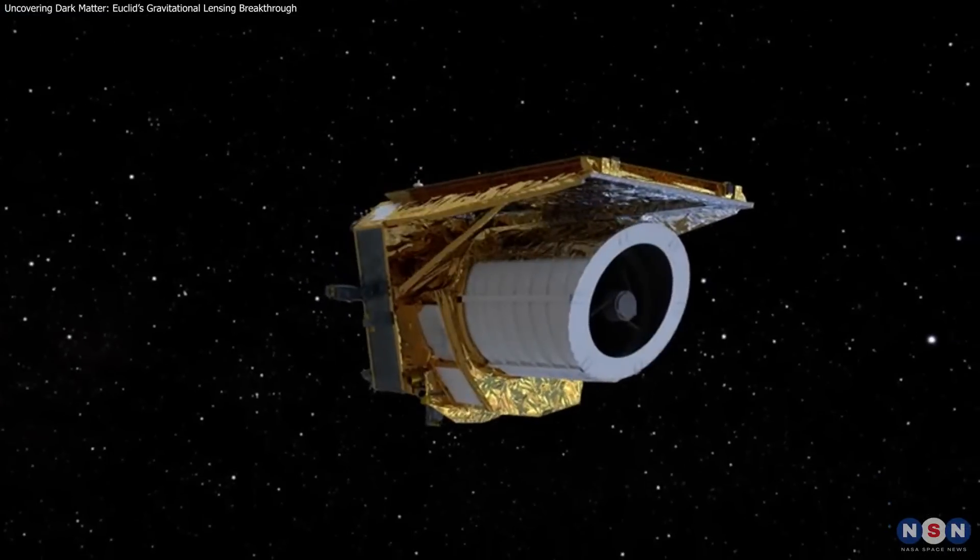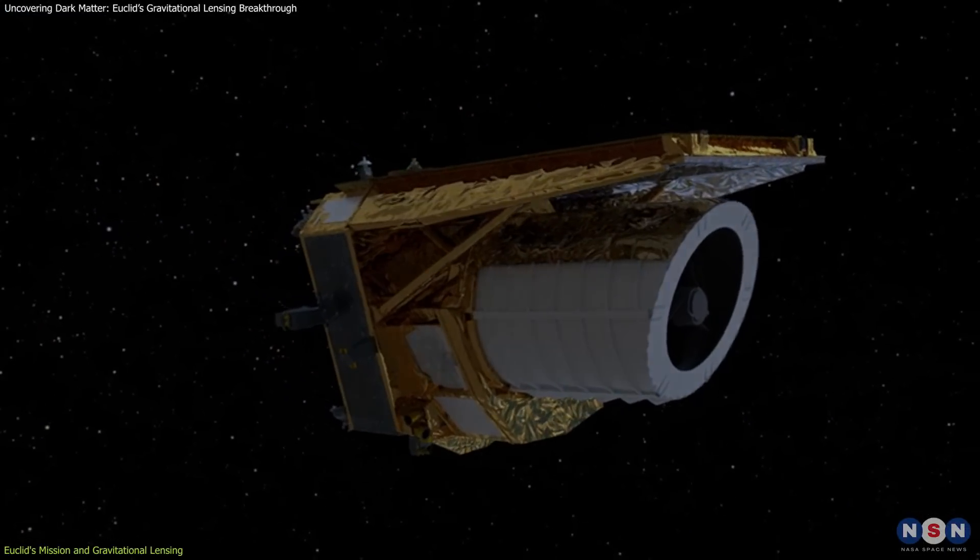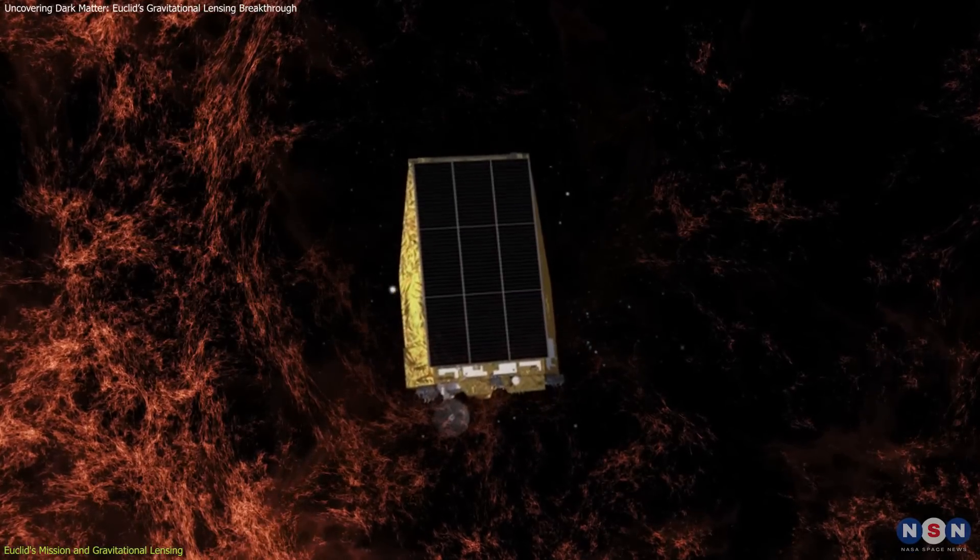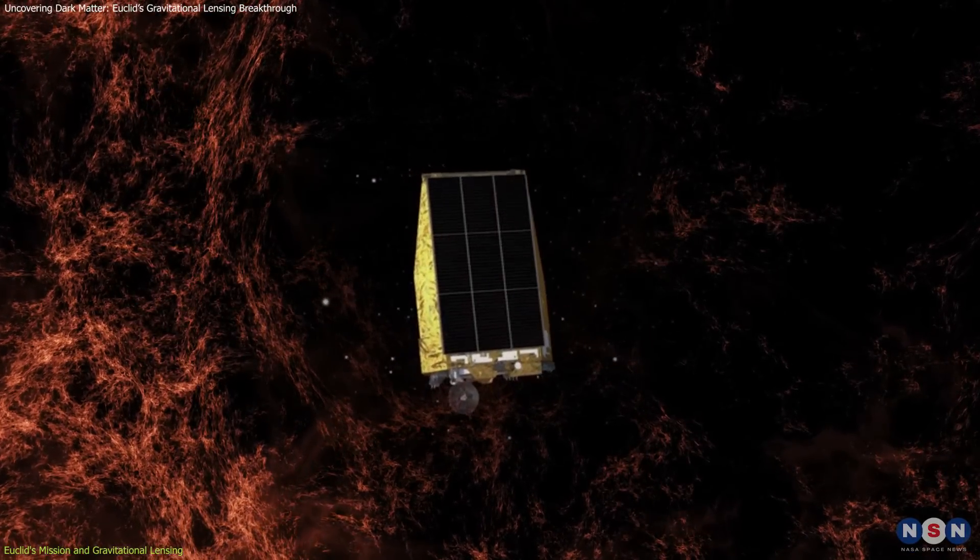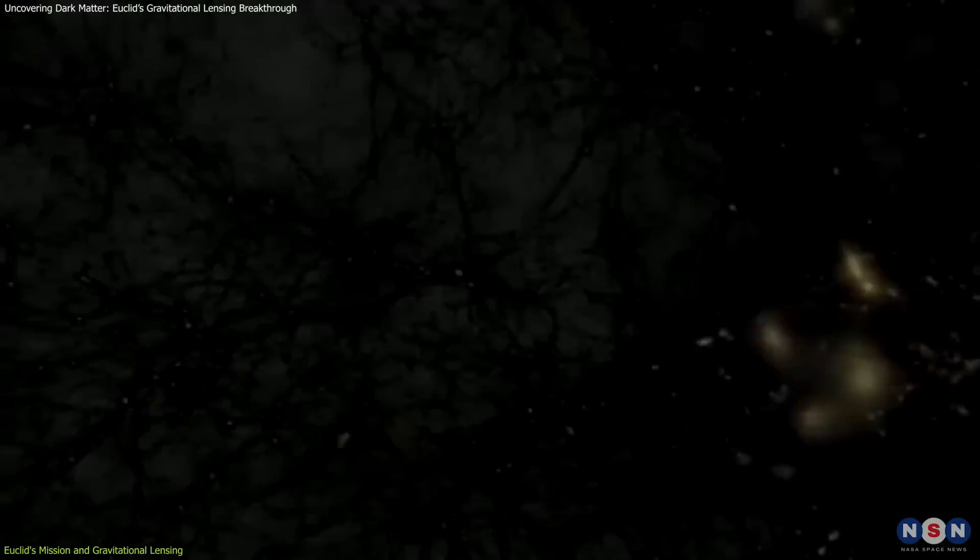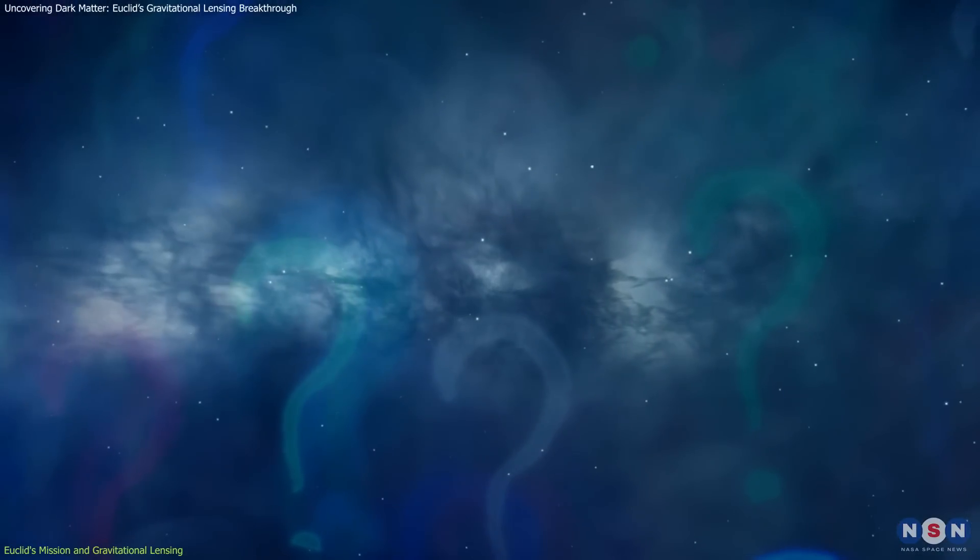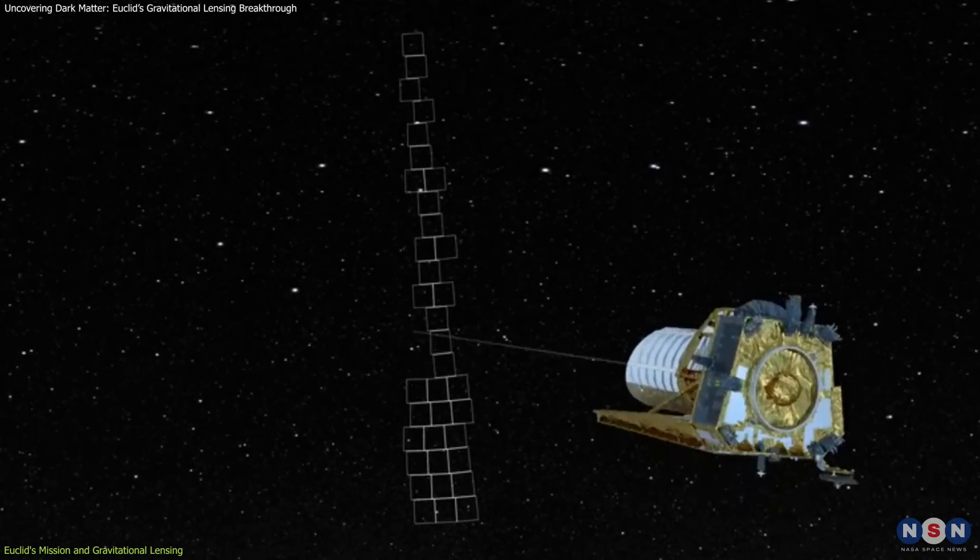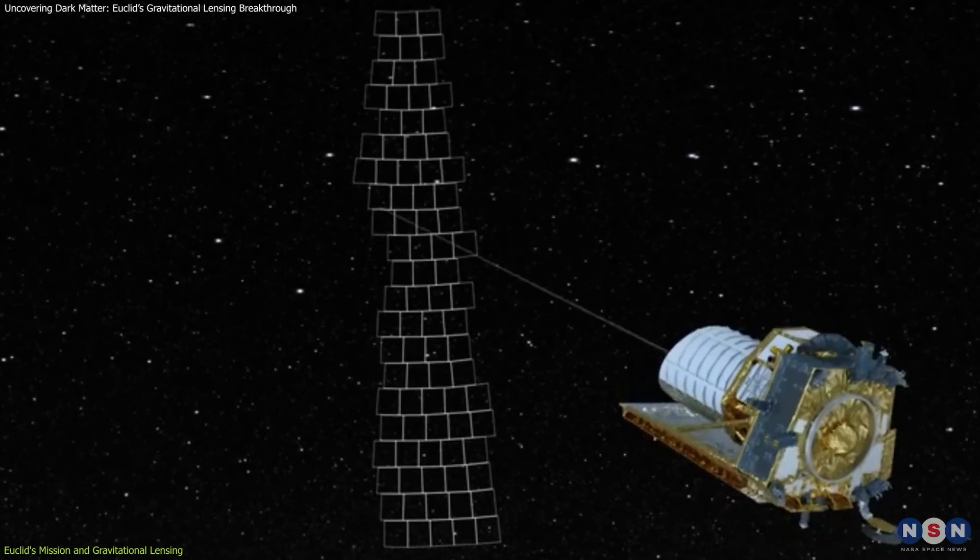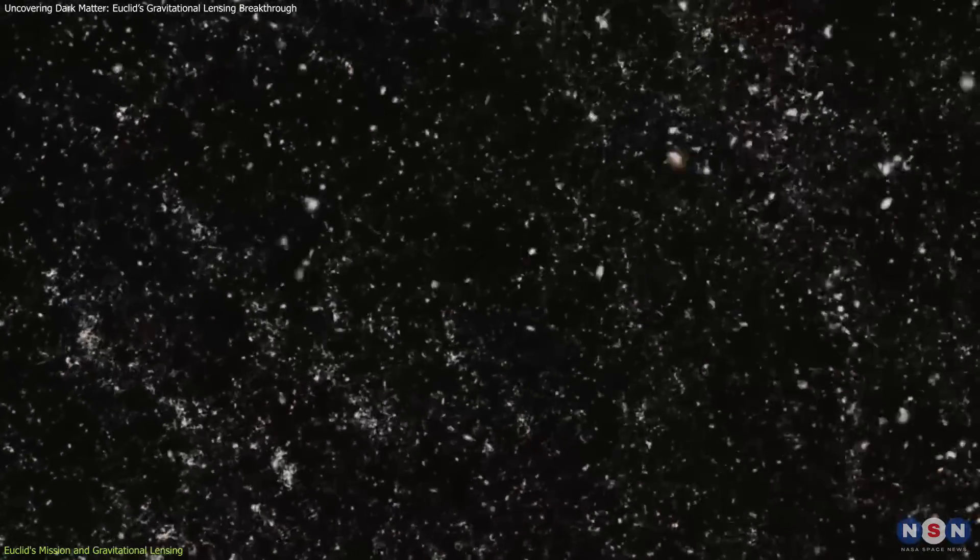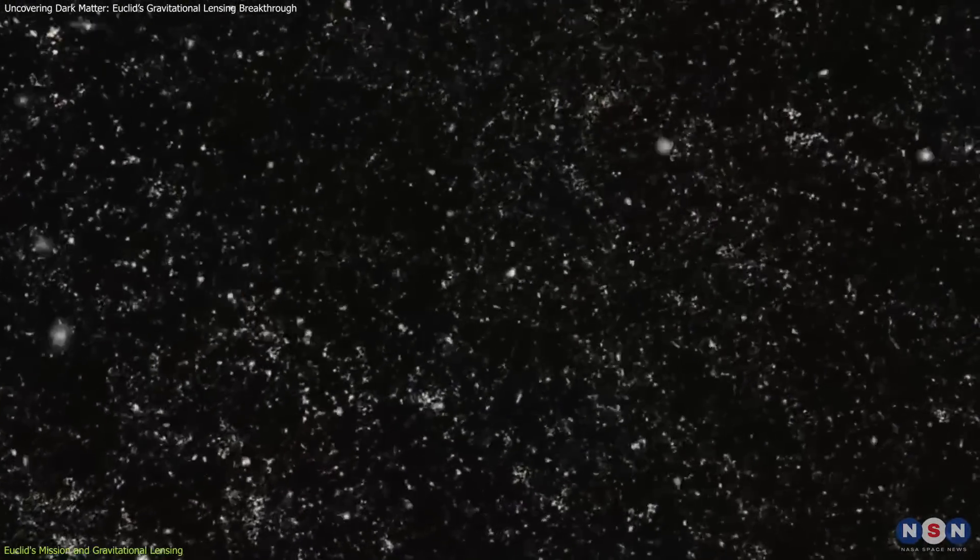The European Space Agency's Euclid mission, launched in July 2023, is a groundbreaking endeavor to explore the dark universe. By focusing on dark matter and dark energy, the components that make up 95% of the cosmos, Euclid seeks to address some of the most profound questions in modern astrophysics. Its primary objective is to map the universe's large-scale structure, studying billions of galaxies and tracing their evolution across time and space.